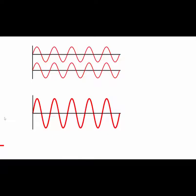A wave with the same frequency and double the amplitude — this is constructive interference. Two waves have interfered in order to form a wave with a greater amplitude.